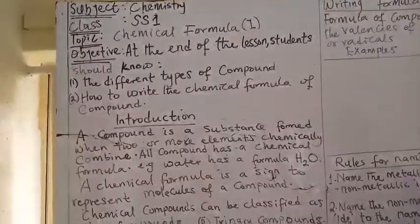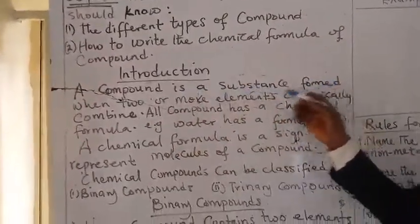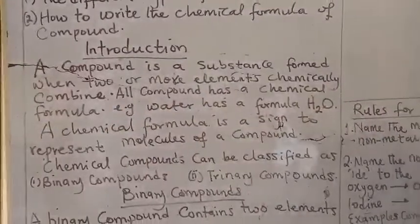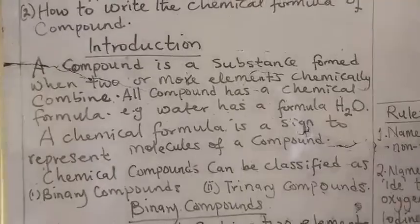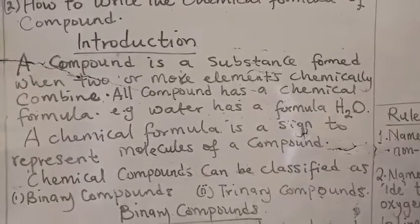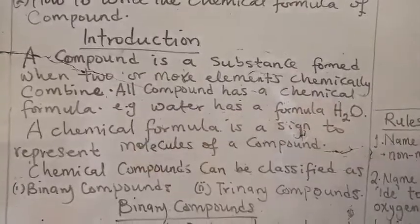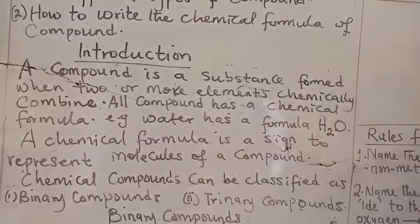As we all know, we have talked about what a compound is, but we have to revise on the definition of a compound. The compound is defined as a substance formed when two or more elements chemically combined. That means a compound is formed when you have two or more elements or atoms combined together chemically. All compound has a chemical formula. A compound must have a chemical formula.